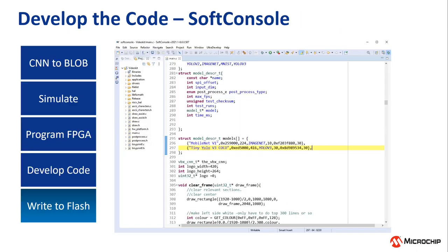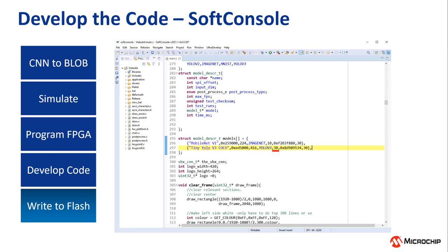SoftConsole is Microchip's open-source-based software development environment for C and C++. Using SoftConsole, we open the main C file which tells the processor to cycle through different CNNs. At line 297, the model shown is TinyYolo version 3. The API takes in the display name, the start and end address of the model in SPI Flash, the input image size — in this case 416x416 pixels — the post-processing type, the number of times the display is updated, a checksum, and the FPS limiter.